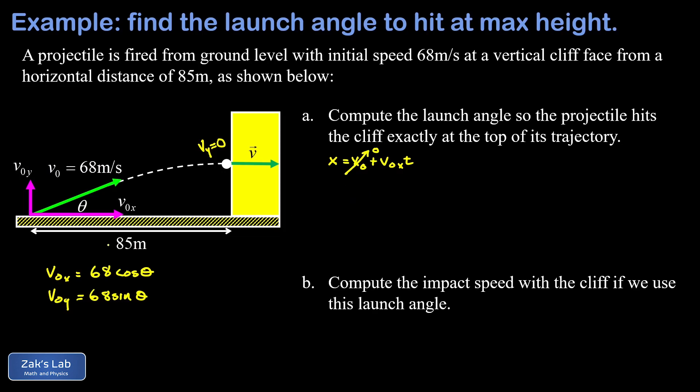Now if I plug in my final position - and we were told that the cliff is 85 meters away from where we launched - I plug in 85 and then we go ahead and put in v naught x as 68 cosine theta, and then we have an unknown flight time left over. So this is one equation with two unknowns in it, that's theta and t. And of course we're going to get a second equation by continuing the analysis in the y direction.